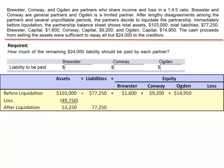The loss is part of equity. So after the liquidation, we still have $53,250 in cash, $77,250 in liabilities, our three capital balances, and a debit balance in the loss account of $49,750.